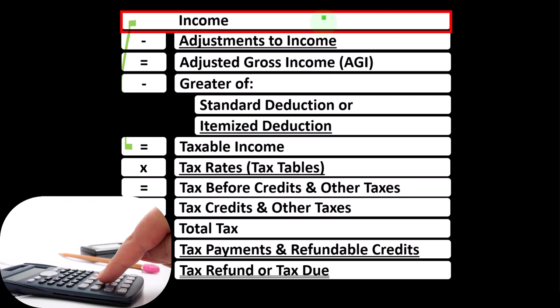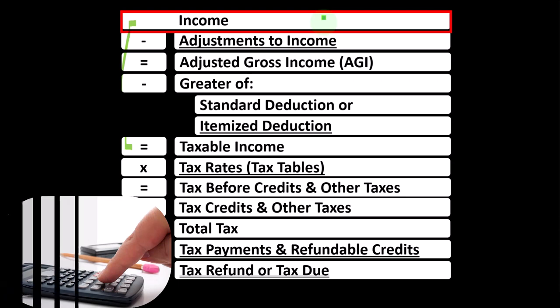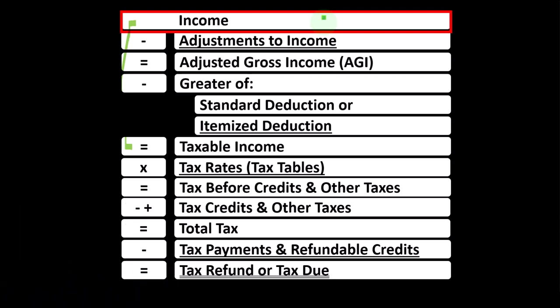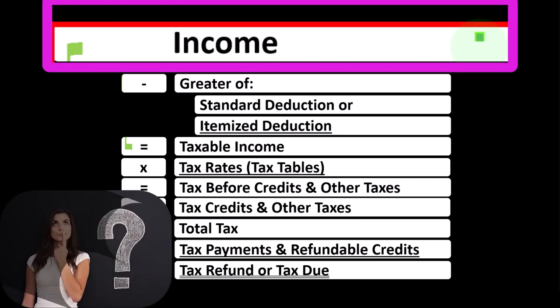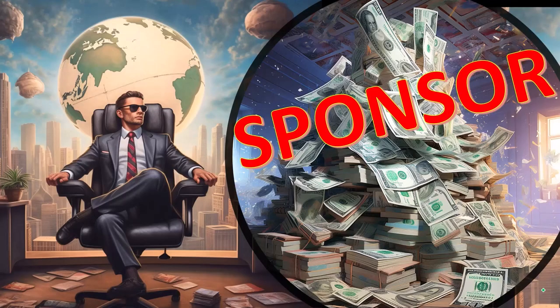For taxes, the income line item is quite expansive. When we hear questions about taxes, we want to identify which line item of the equation we're asking about and go into detail about that particular line item. With regards to income, the question is: do we have to include this item in income or not?